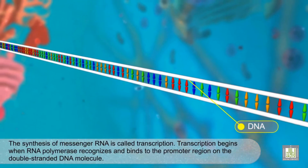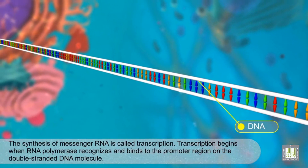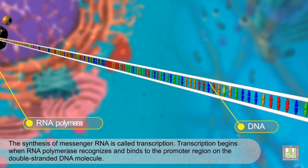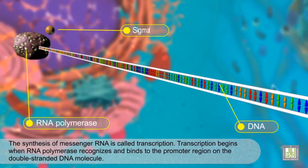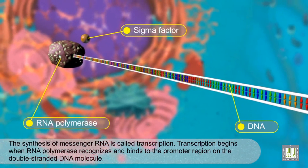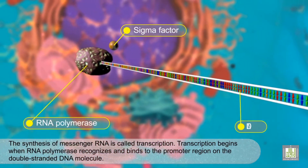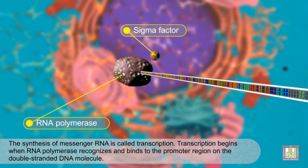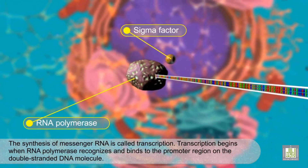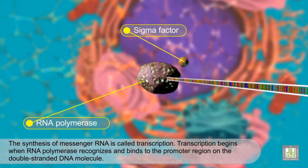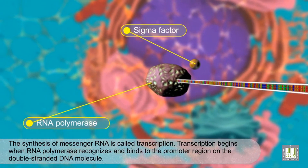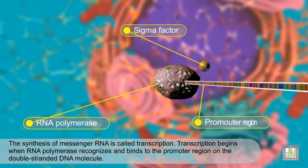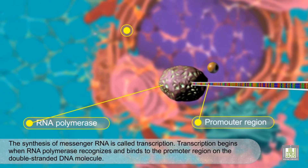The synthesis of messenger RNA is called transcription. Transcription begins when RNA polymerase recognizes and binds to the promoter region on the double-stranded DNA molecule.